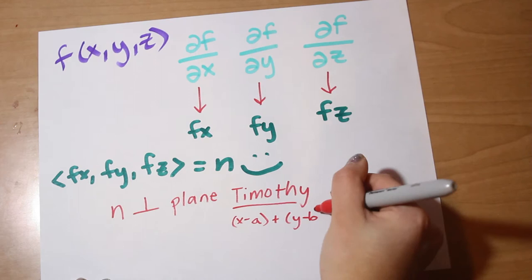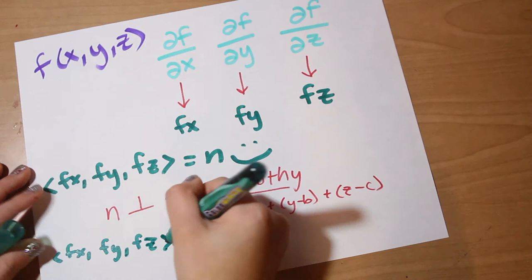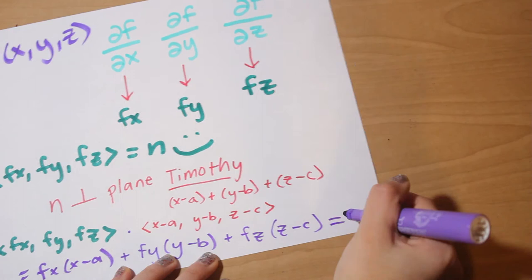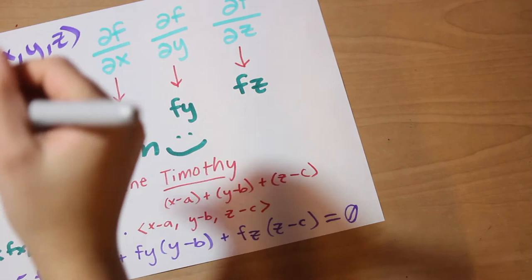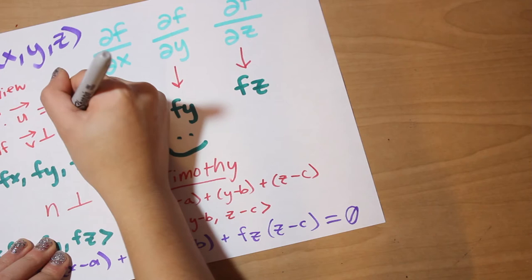And if these two are orthogonal, we can use the dot product and get a real equation with a real equal sign. So we now have this explicit formula: fx times (x minus a) plus fy times (y minus b) plus fz times (z minus c), and all of that set equal to zero. Remember, this equals zero because the two vectors are orthogonal and the dot product of two perpendicular vectors is always zero.